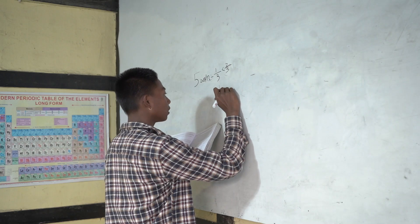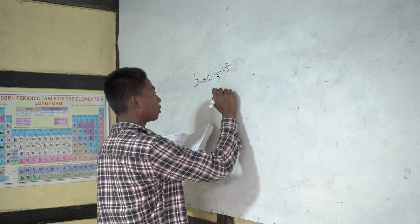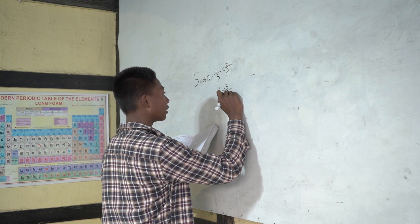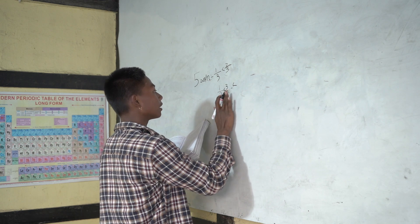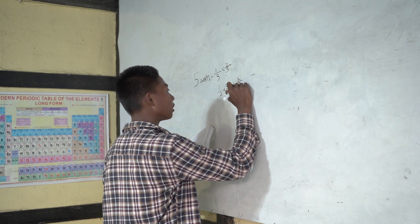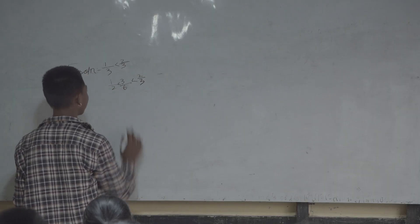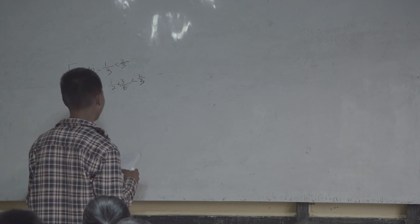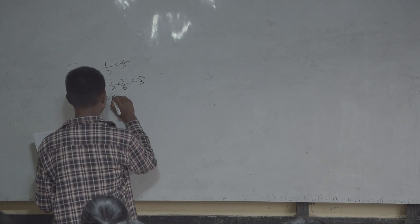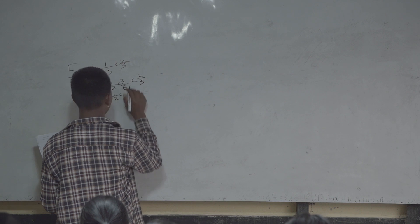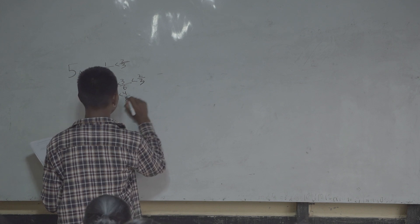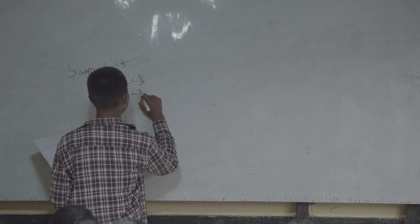Between 1/3 and 2/3, we need to find six rational numbers. We consider 3/3 and work with the denominators. 6/3 and 2/3 are part of the working.